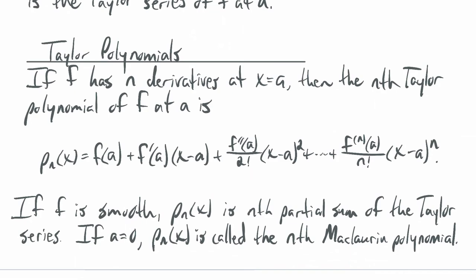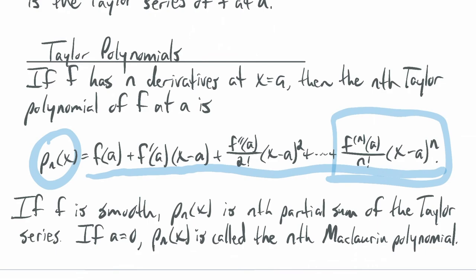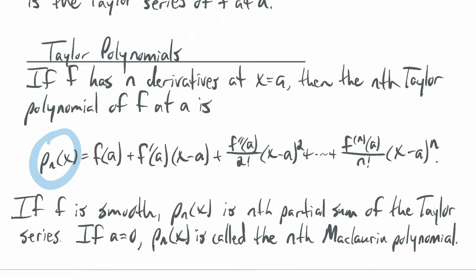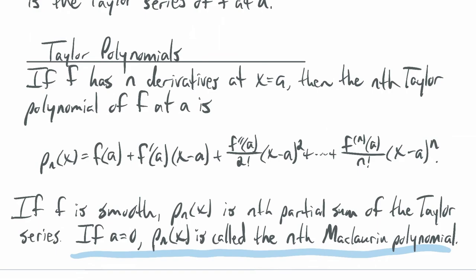Taylor polynomials: if f has n derivatives at x equals a, the nth Taylor polynomial of f at a is p sub n of x, which equals f of a plus f prime of a times x minus a, all the way up to the nth derivative of f evaluated at a over n factorial times x minus a to the n. This is just the nth partial sum of the Taylor series. If a equals 0, this is called the nth McLaurin polynomial.